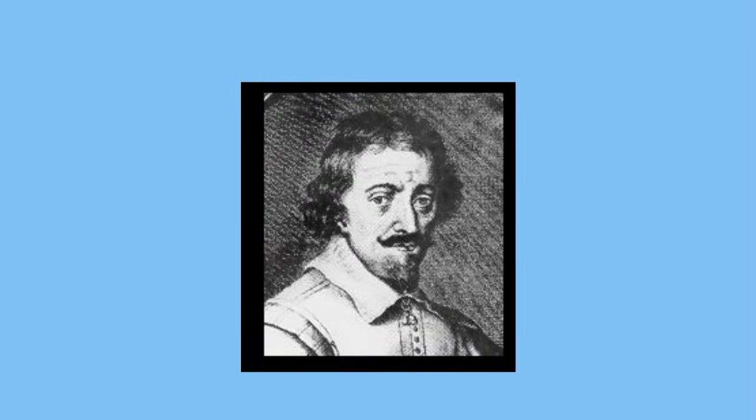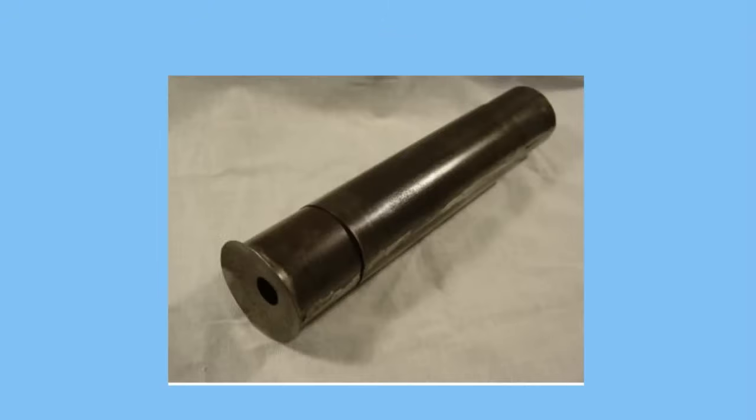During the 1590s two Dutch spectacle makers, Hans and Zacharias Janssen, began experimenting. They would put several lenses in a tube and made a very important discovery. The object near the end of the tube appeared to be greatly enlarged, much larger than just using a magnifying glass.